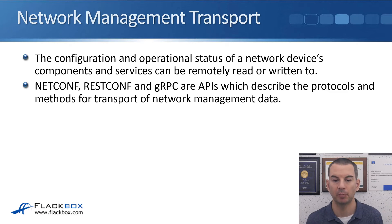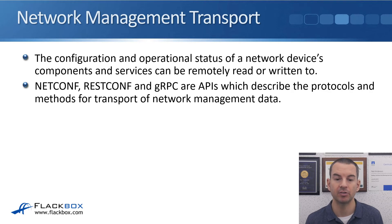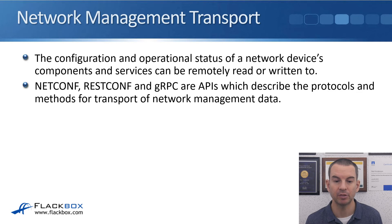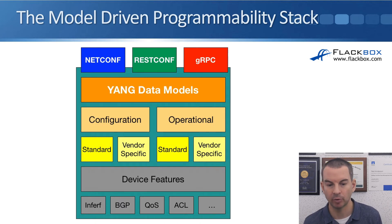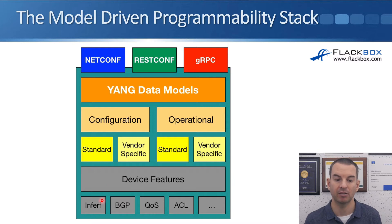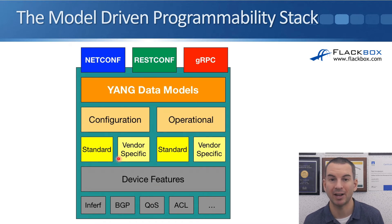The configuration and operational status of a network device's components and services can be remotely read or written to. NetConf, RESTConf, and gRPC are APIs which describe the protocols and methods for transport of that network management data. Looking at the model-driven programmability stack, on our network device we've got things like its interfaces, and also its features like BGP, QoS, etc. And then we've got the modules there, which can be standard, such as the IETF interfaces that you just saw.